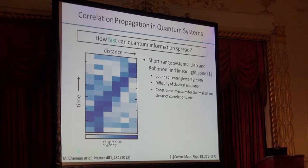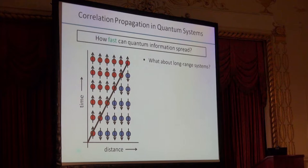But left unanswered so far by experiments and Lieb-Robinson type theory is what happens to long-range interacting systems. Certainly there are a variety of different important long-range interacting systems in nature, but the Lieb-Robinson theory was never really developed to answer what happens when you go away from just the nearest neighbor case.